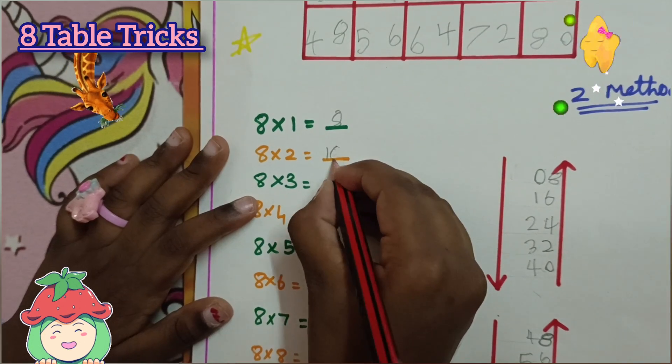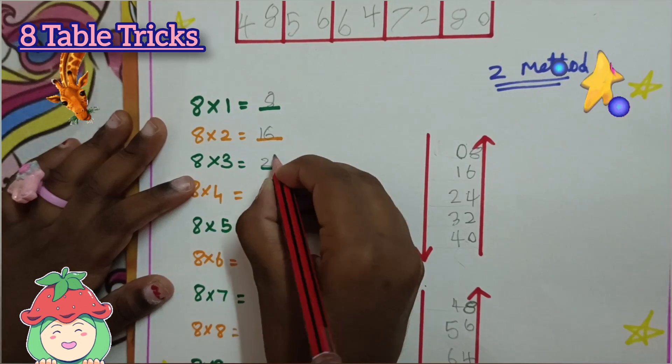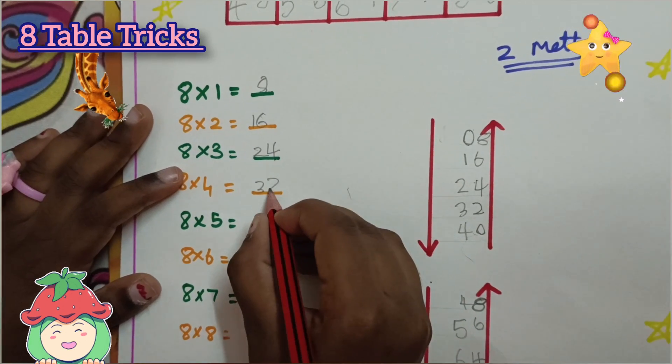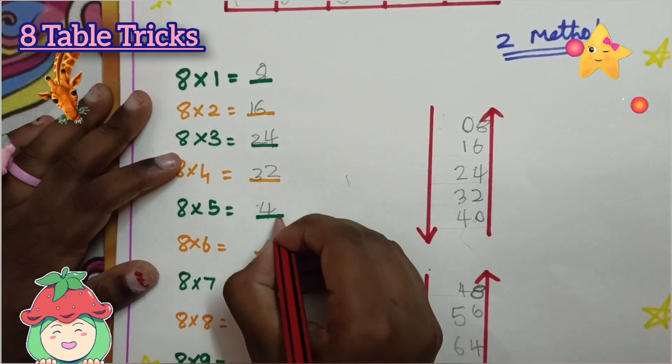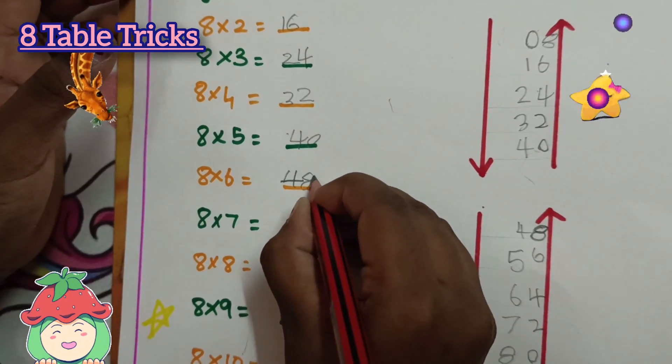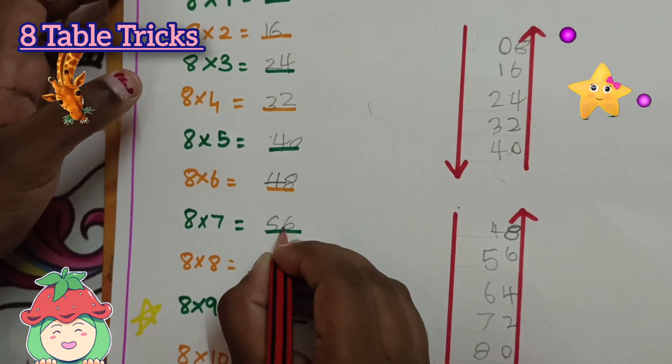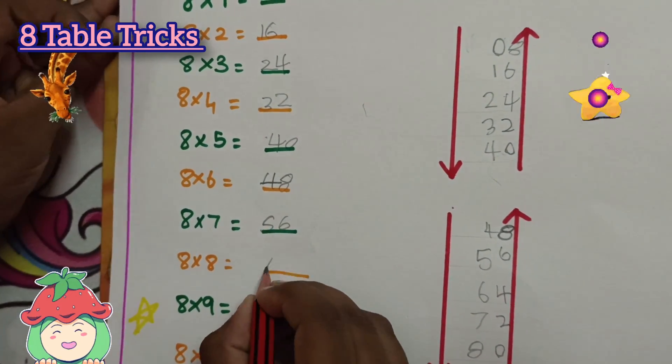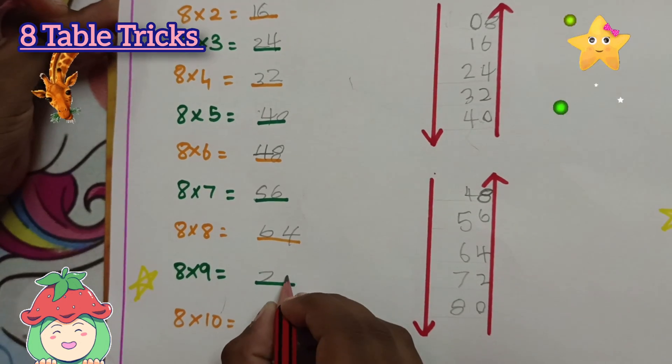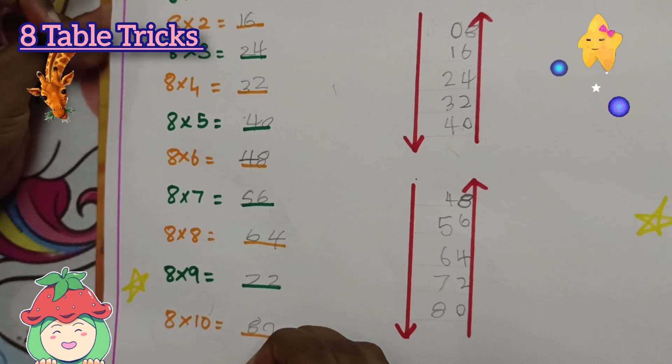The 8 times table results: 16, 24, 32, 48, 56, 64, 72, 80.